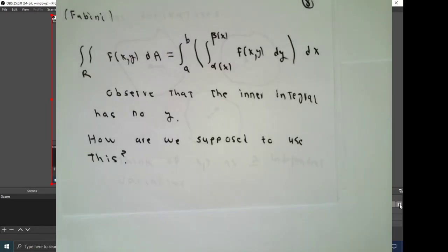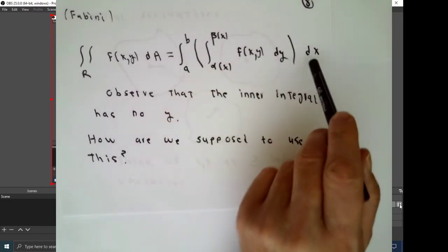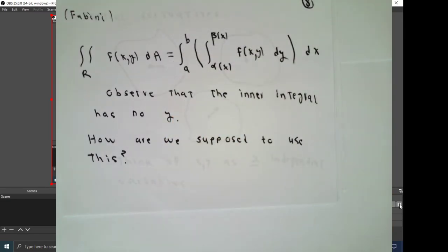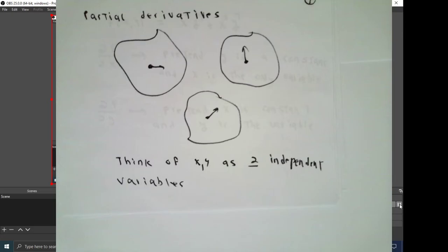Fubini's Theorem states that the double integral in such a case of f of xy with respect to area in the xy-plane is the integral from A to B with respect to x, that would be the outside portions, of the integral from alpha x to beta x of f of x and y, integrated with respect to y. Despite appearances that inside integral contains no reference to y.